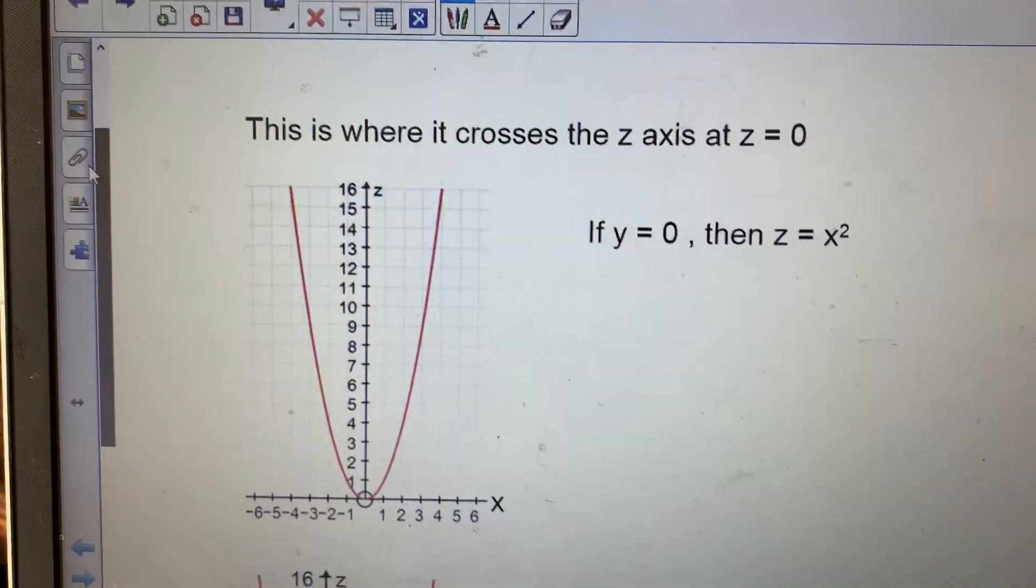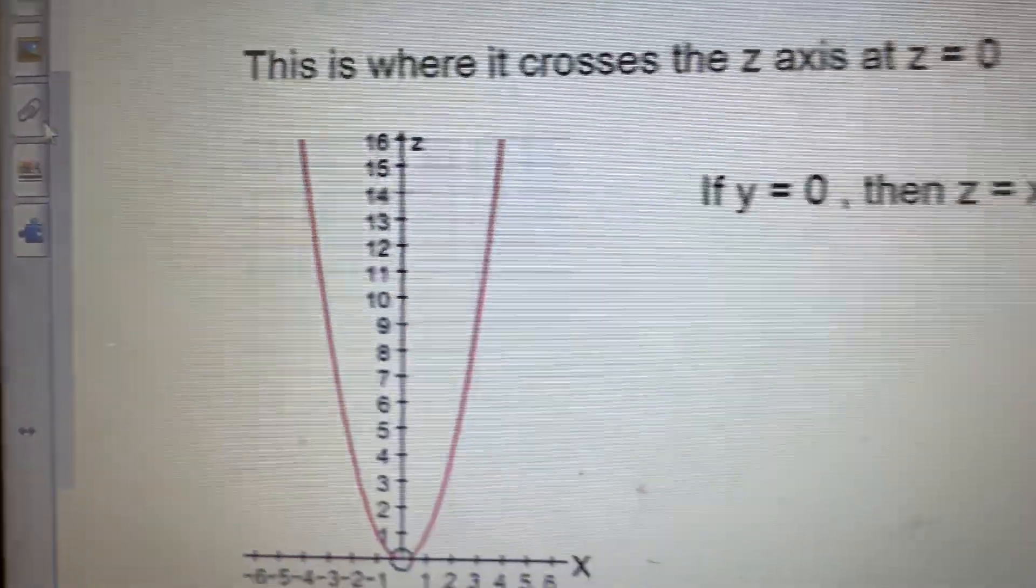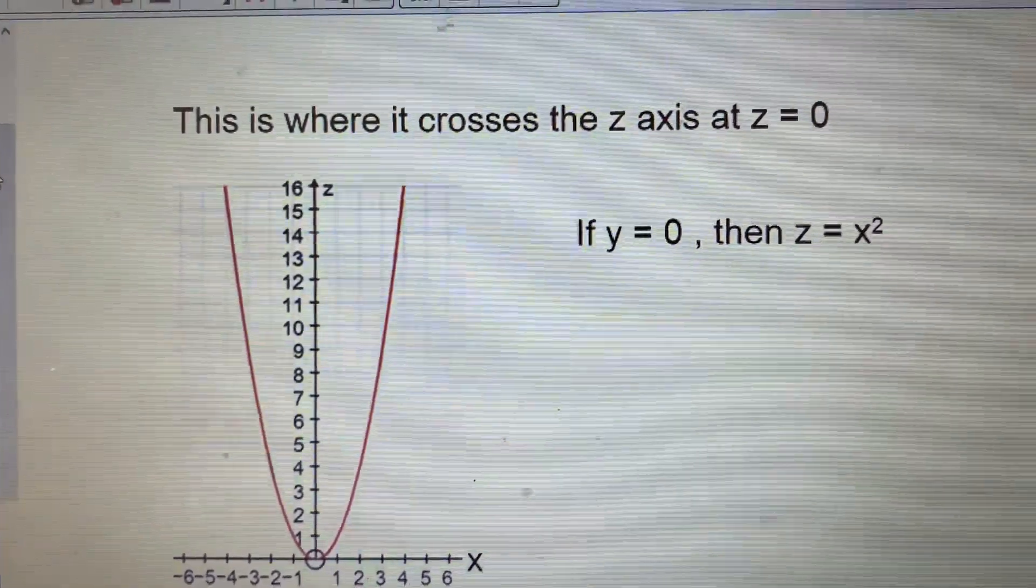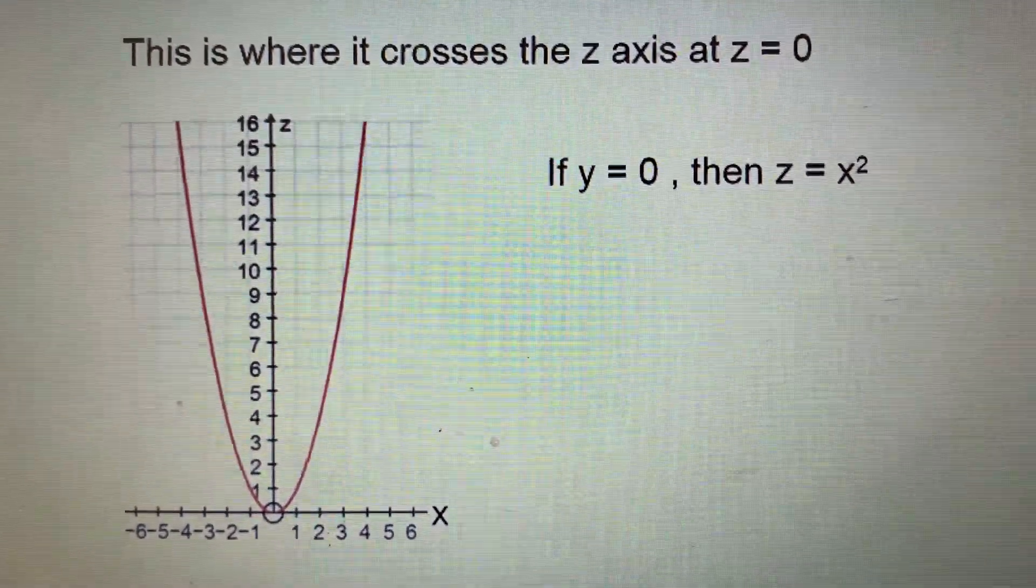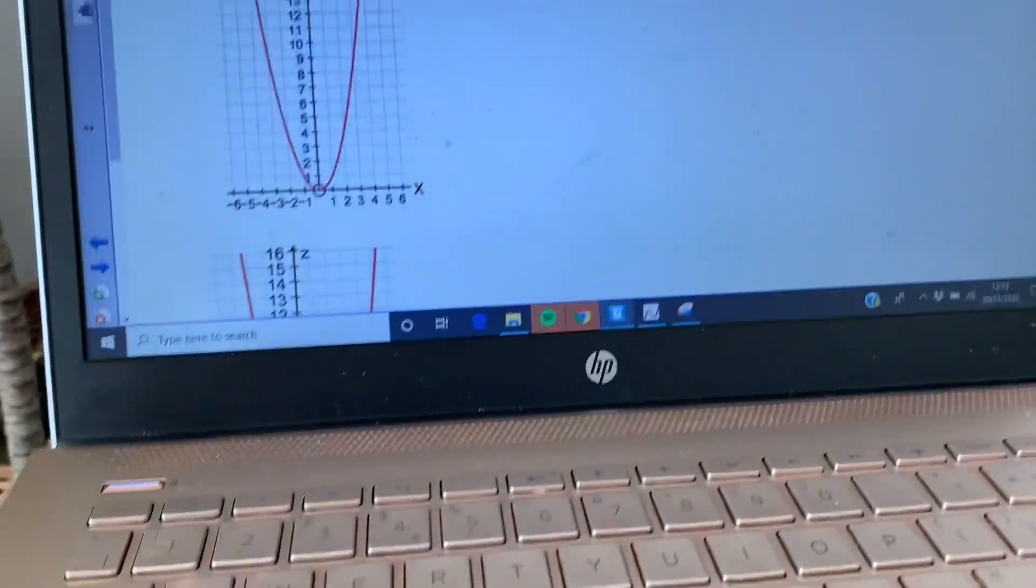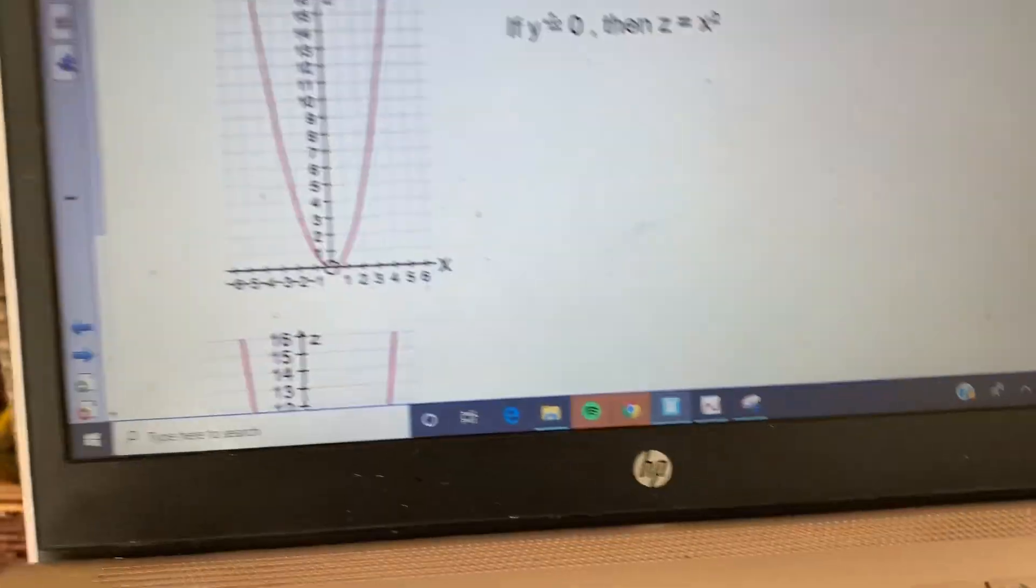The two graphs in your question are, it touches the axis, the X axis there. So when Z equals 0. I've just spotted, okay, it's that one.